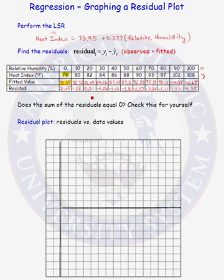We continue this process for each of the other data pairs and we see that the predicted or the fitted value when the relative humidity is 100%, plug in 100, multiply it by 0.277 and add 75.95, gives us a fitted value of 103.65 degrees Fahrenheit which gives us a residual of 4.35.